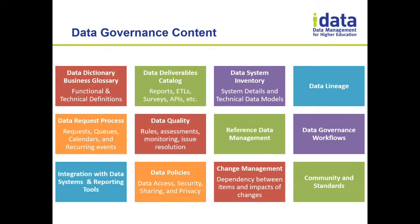Data at rest is mainly managed in the data system inventory. Here you can document things at a system level — for example, knowing your student information system exists, but also the census data extract run by IR, and even a spreadsheet kept by a finance person who runs a fancy calculation twice a year. Knowing about the existence of all those systems and their purpose is an important thing to do from an inventory standpoint.